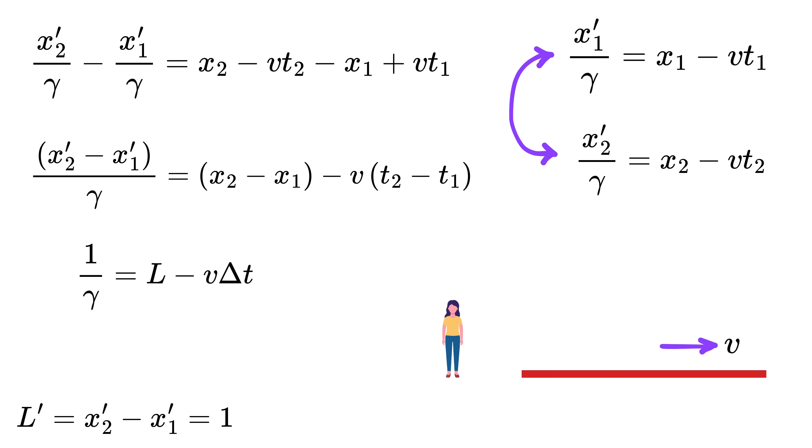Remember, Alice is trying to measure the length of a moving object, and that requires her to look at both ends simultaneously in her own frame. This means that delta t equals zero for Alice. So we are left with L equals one over gamma. Here v is 0.8c, and thus gamma equals this, or five over three.